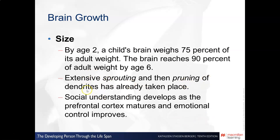Two key terms to be aware of are sprouting and pruning of dendrites. Sprouting means basic growth, while pruning means the cutting down of dendrites — not necessarily death, but a reduction. We'll look at this in more depth as we progress through the course.